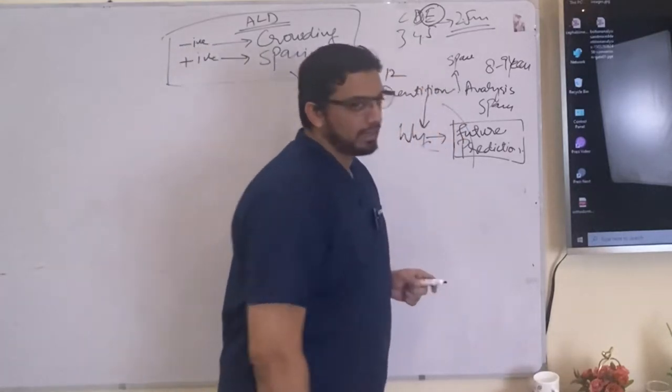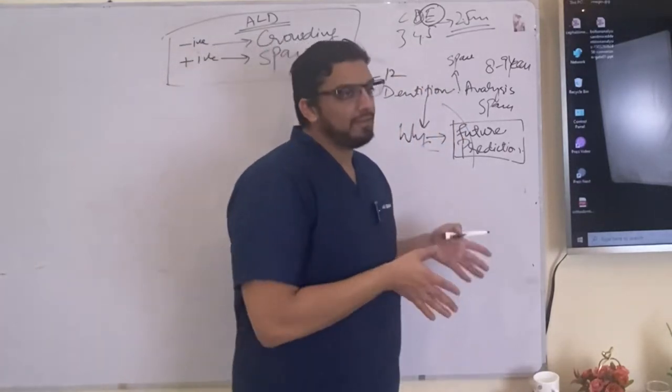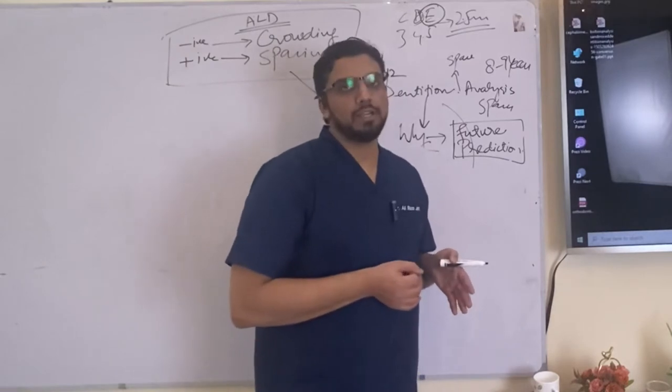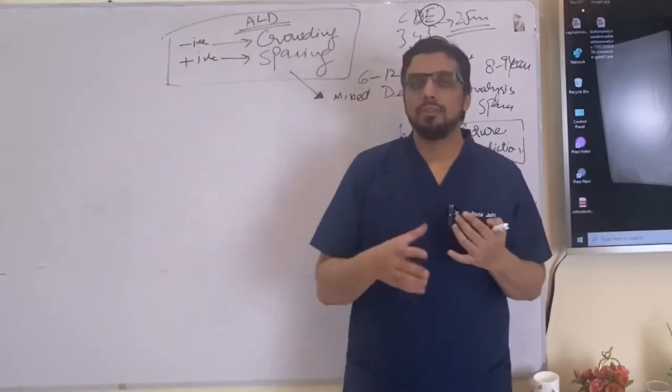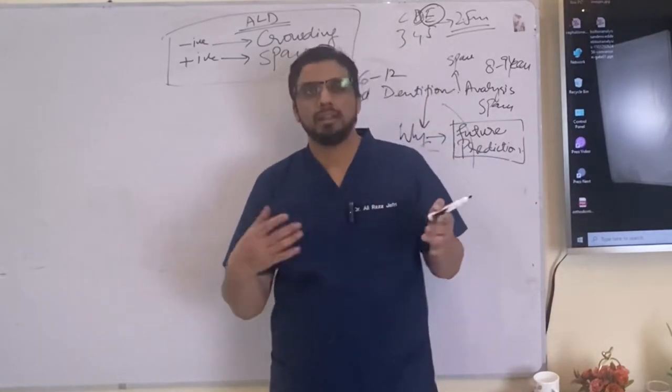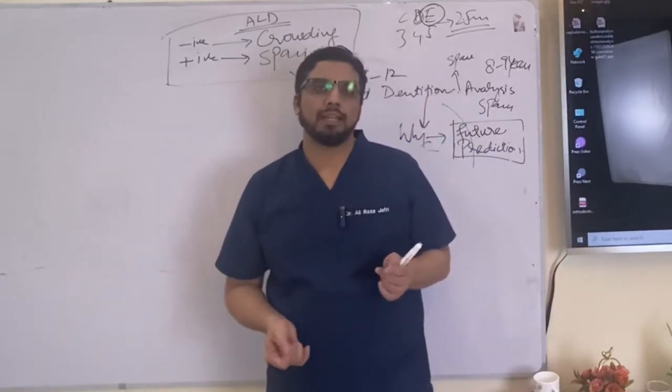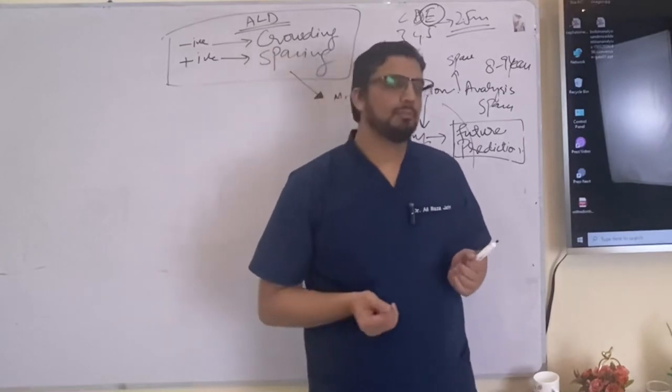The third method I am trying to tell you is the Tanaka and Johnson method. Now initially we had in the radiographic method we had the issue of the radiograph because radiograph has to be present and the radiograph has the issue of the rotated teeth, issue of radiography in the canine area and rotation of the teeth are the issues.